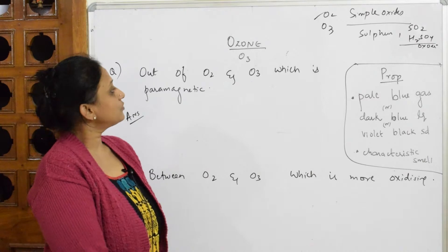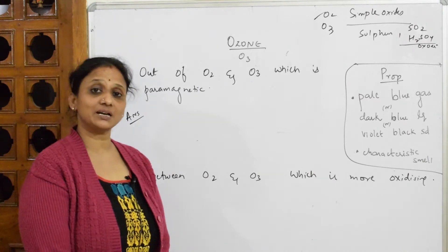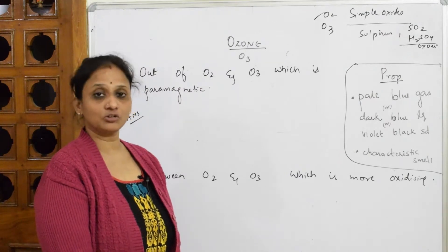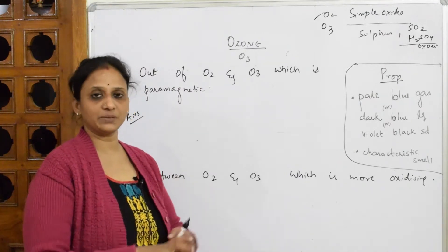Now, they've asked me out of oxygen and ozone, which is paramagnetic nature? It's quite simplest question it is. But basically, when you're learning the molecular orbital theory, I'm not going to the depth of that.